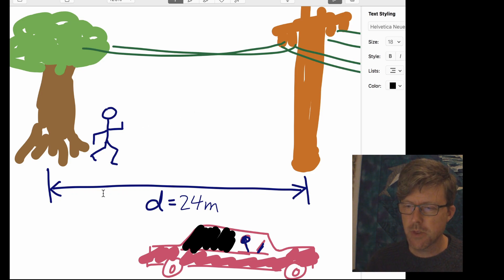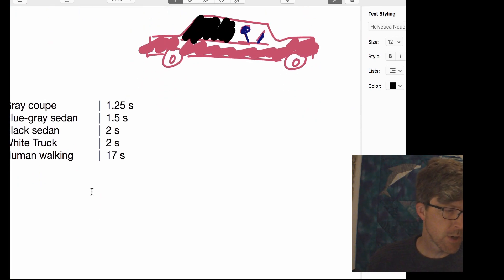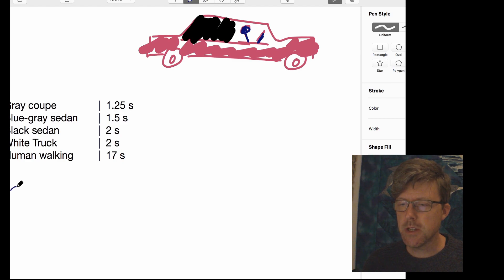We got some results here. The distance that I paced off was 24 meters, roughly 24 meters. Let's do some calculations to find out how fast these things were going. In order to figure out the speed, we need to take v as the speed, v for velocity or speed, v equals d over t, right? So let's take d over t for the gray coupe. And so what that is, the distance is 24 meters. And the gray coupe did it in 1.25 seconds. 24 meters divided by 1.25 seconds. So 19.2 meters per second.